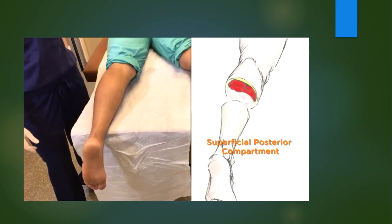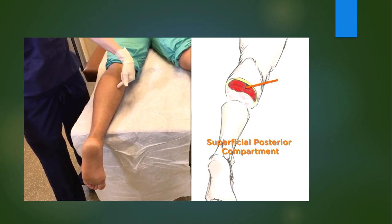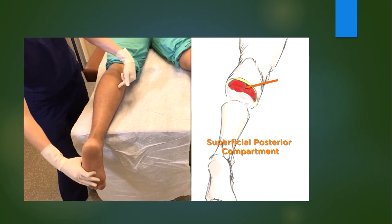And finally, the superficial posterior compartment. Go three to five centimeters off midline and insert the needle two to four centimeters deep. The pressure will rise with dorsiflexion of the foot.